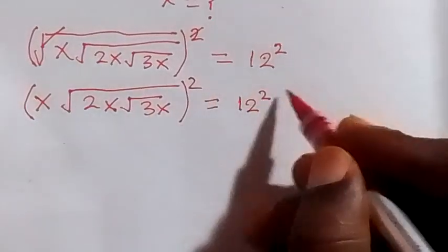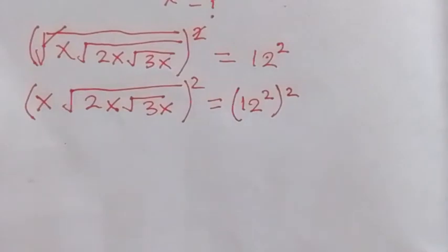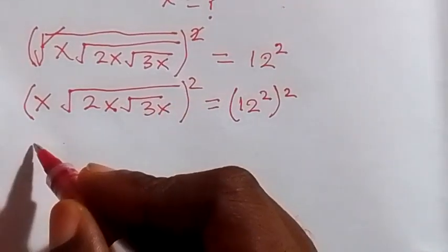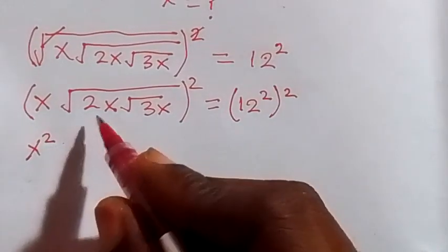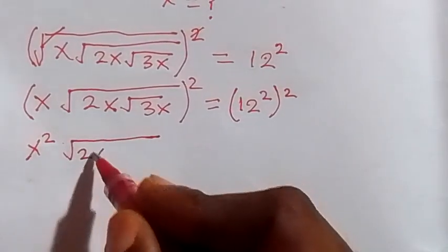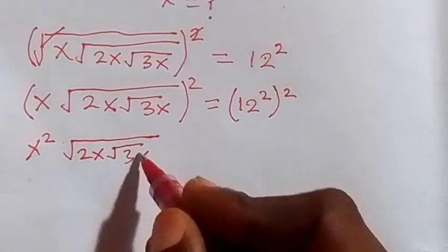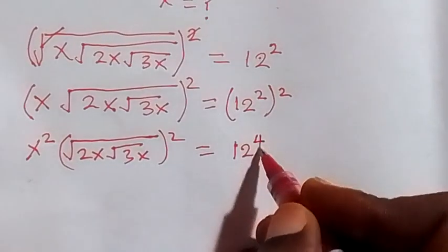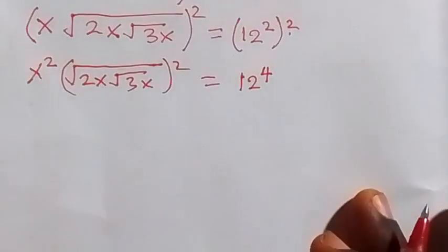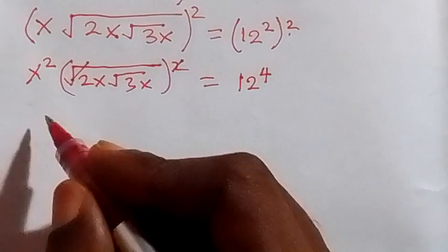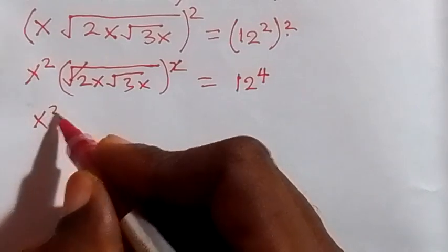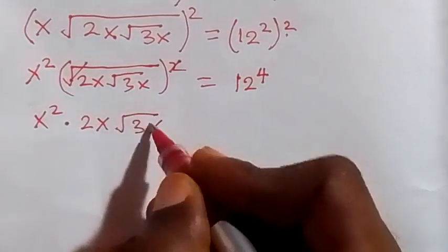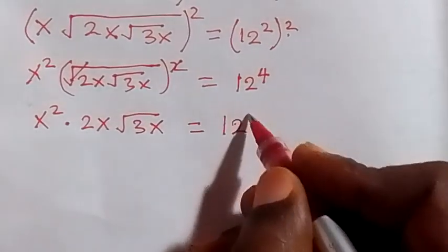We square both sides again. This square affects the expression, giving us x squared times the square root of 2x times the square root of 3x, all squared, equals 12 raised to the power 4. The power of 2 affects the square root and they cancel each other, so we have x squared times 2x times the square root of 3x, equals 12 raised to the power 4.